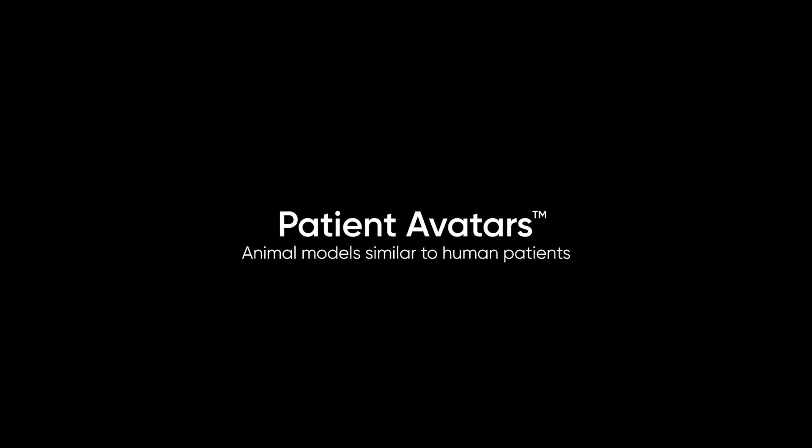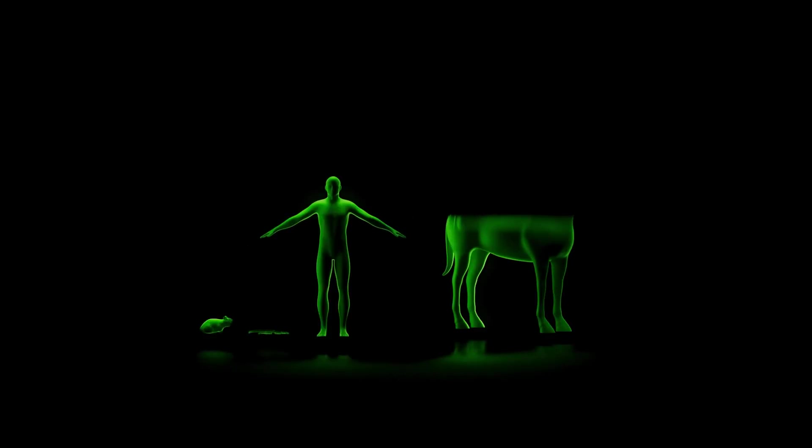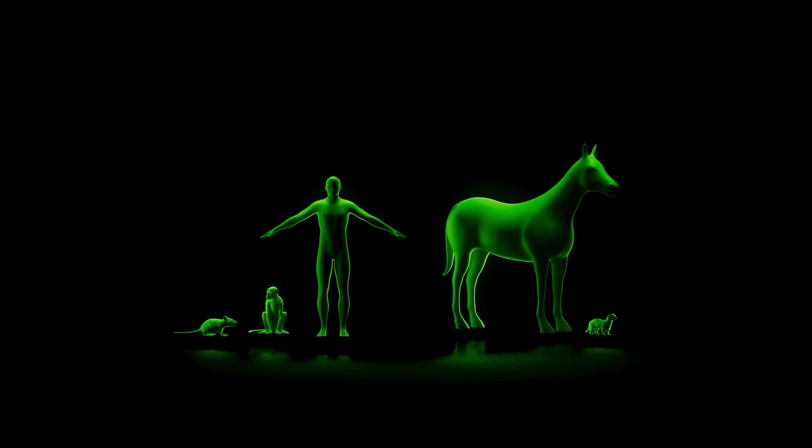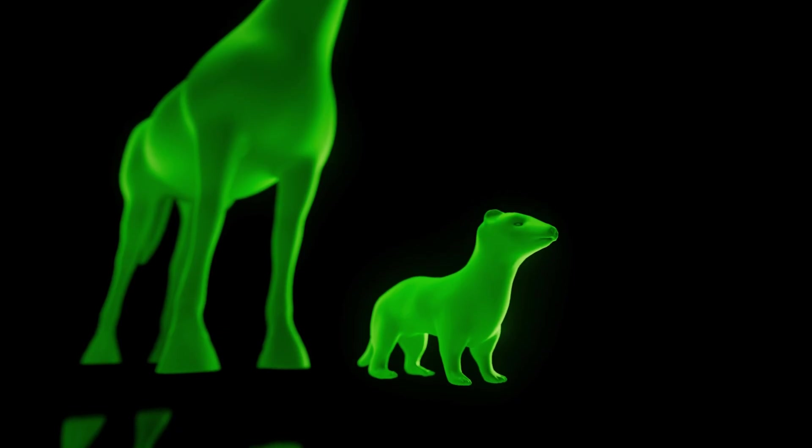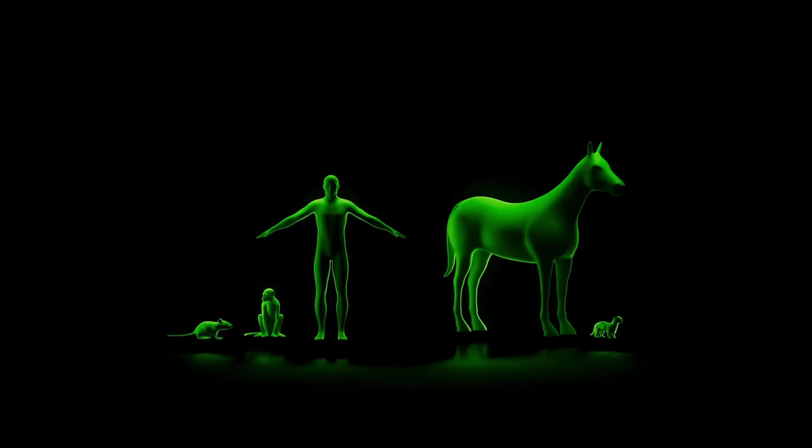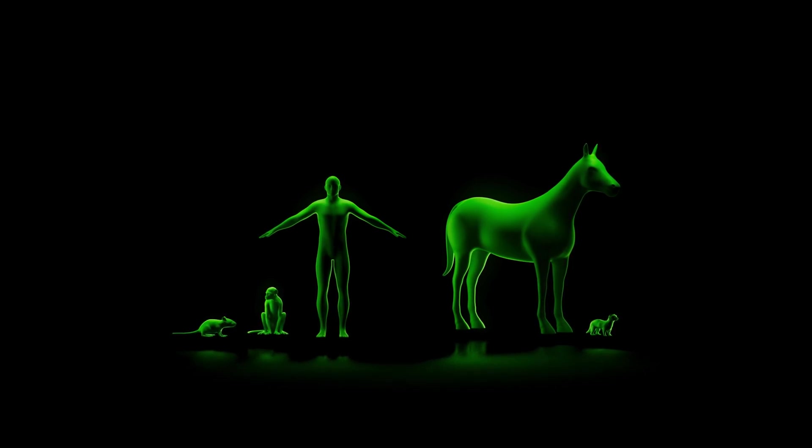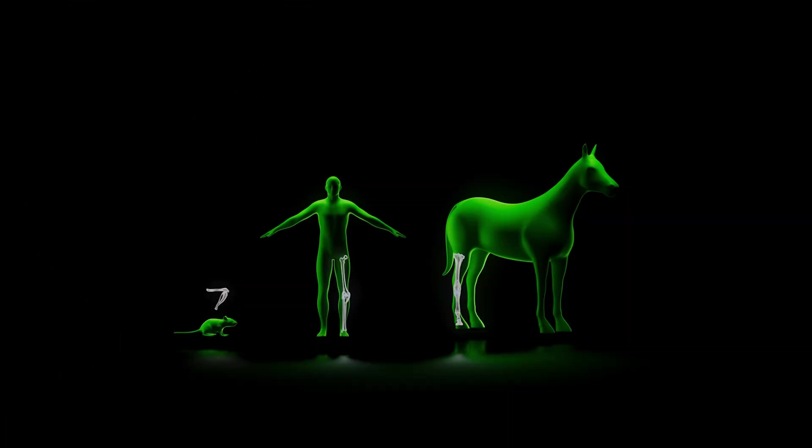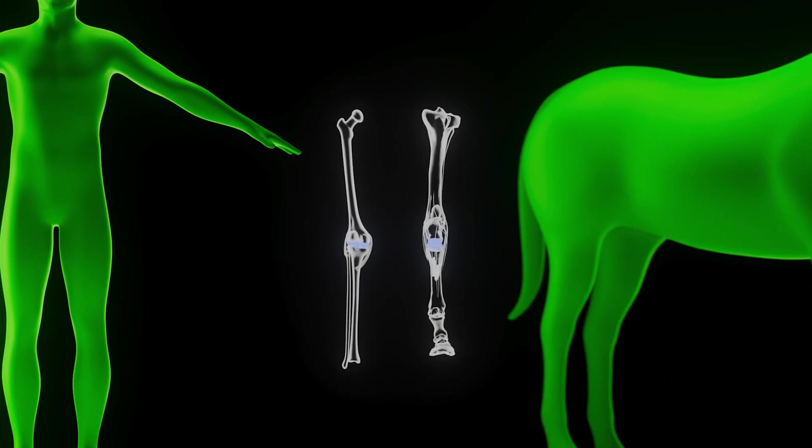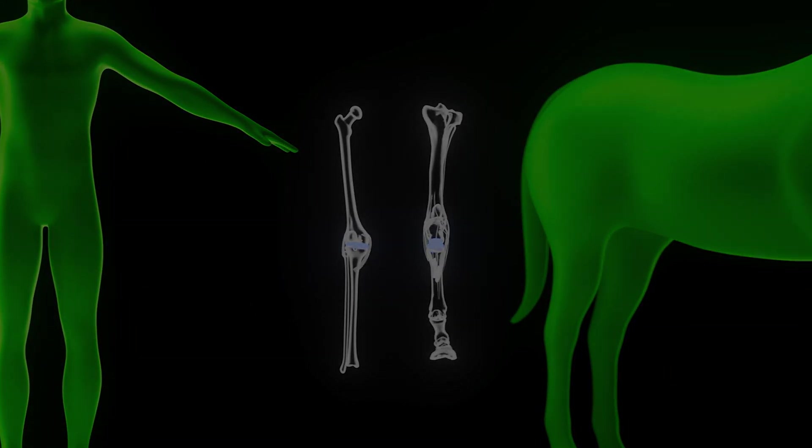We identify animal models whose biology is more representative of human patients for each of our target indications. Because few animals are required for screening, we are not limited to those that are small and plentiful. Instead, we can choose advanced animal models that have often acquired the disease naturally and have other conditions associated with biological aging as a human would. These models have anatomy and physiology that more closely match humans, which gives us data from a context that captures key features of human disease. We call these patient avatars.